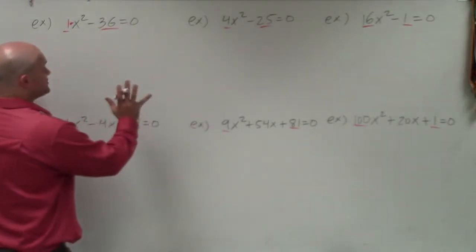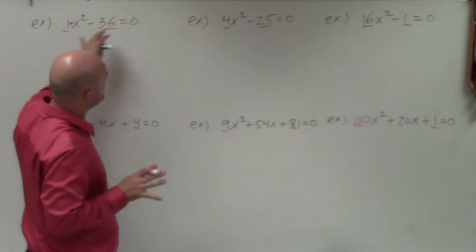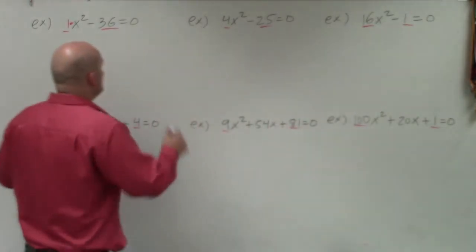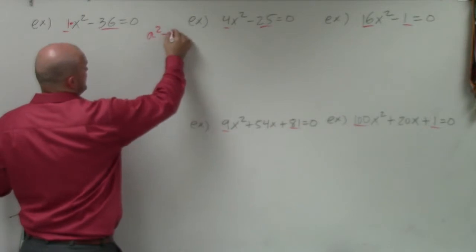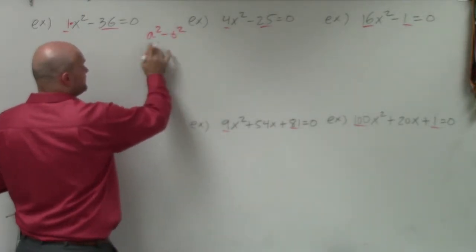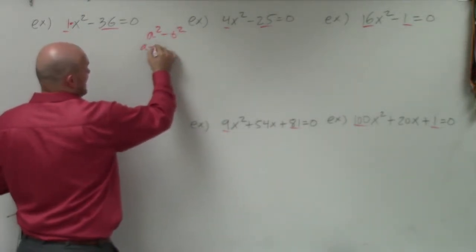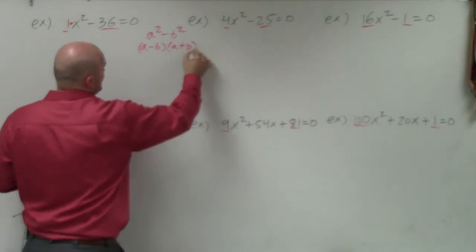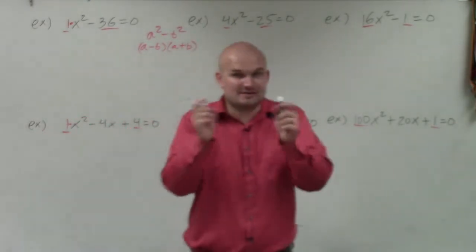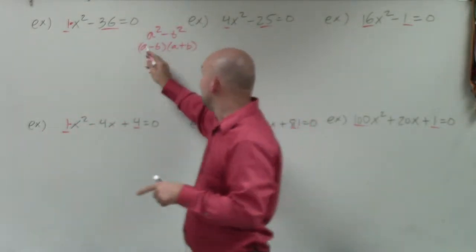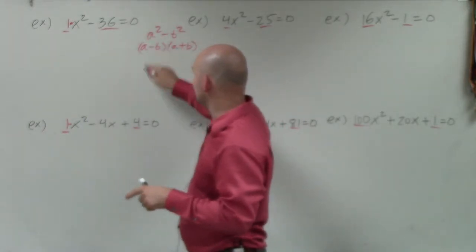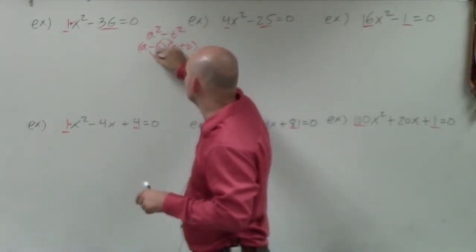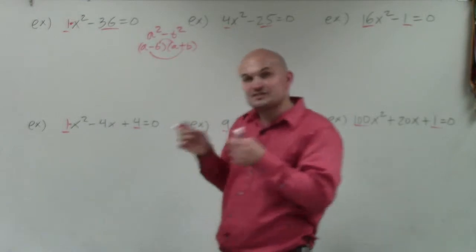The difference of two squares is basically when you have a square term minus another square term. The rule goes like this: if you have a squared minus b squared, then you can factor this into (a minus b) times (a plus b). The reason this works is if you apply FOIL: a times a is a squared, negative b times b is negative b squared, and the middle terms cancel each other out.